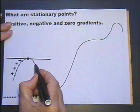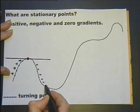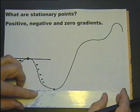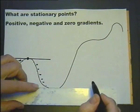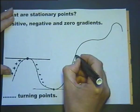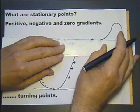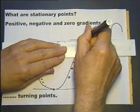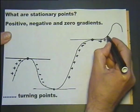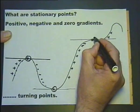Any point down here would have a negative gradient until we get to this point here, and the gradient of that point again would be zero. As we continue up the graph here, the gradient is positive until we get to this point here, and the gradient of that point is again zero. And after that point, the gradient is positive again.